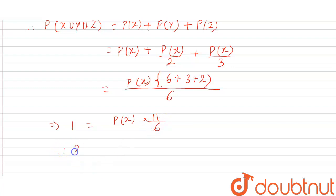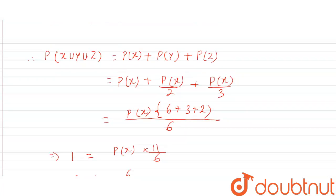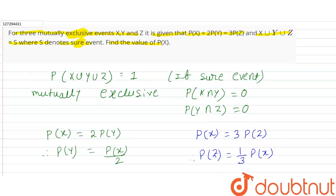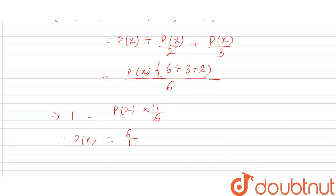Therefore P(X) equals 6 by 11. So P(X) value is 6 by 11. If you have a similar question, please let me know in the video.